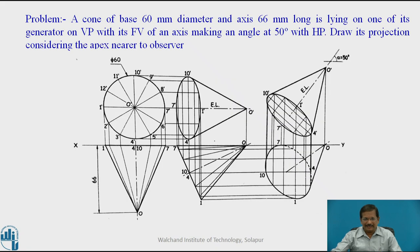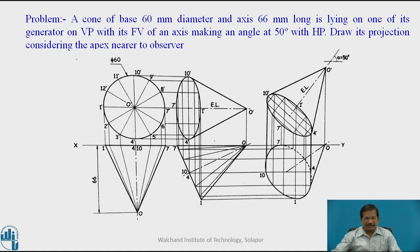During the last session, we studied the solid resting on HP. Now we will study the solids which are resting on VP — sometimes called nailed on VP or fixed on VP. This problem is related to a cone: a cone of base 60 mm diameter and axis 66 mm long, resting on one of its generators on VP, with its front view of an axis making an angle of 50 degrees with HP. Draw its projection considering the apex nearer to the observer.